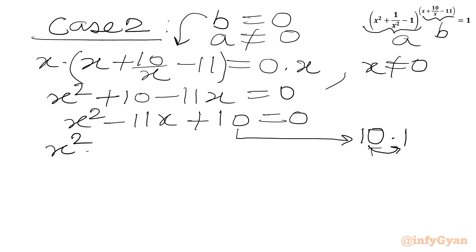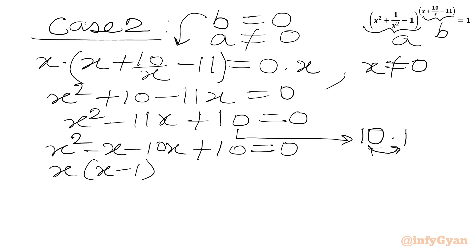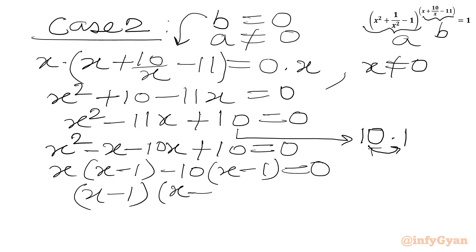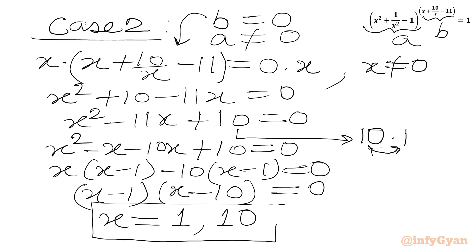Splitting −11x as −x − 10x, we write x(x − 1) − 10(x − 1) = 0, giving (x − 1)(x − 10) = 0. Applying the zero product rule: either x − 1 = 0, giving x = 1, or x − 10 = 0, giving x = 10. So from case 2 we have two real solutions: x = 1 and x = 10.